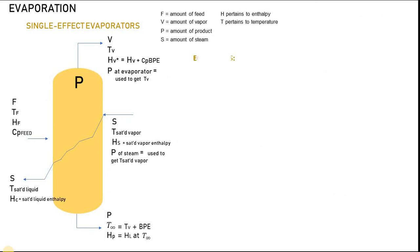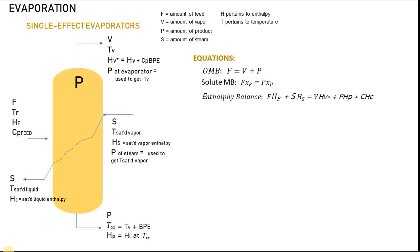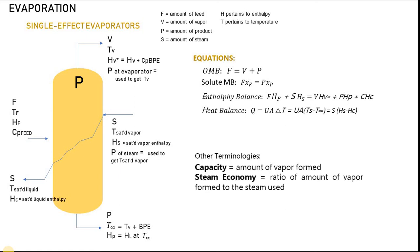Here are our equations for evaporation: we have the overall material balance, the solute material balance, the enthalpy balance, and the heat balance. Our equations are pretty simple — the tricky part in solving evaporator problems is understanding the problem. The enthalpies can be found in reference textbooks such as Perry's.